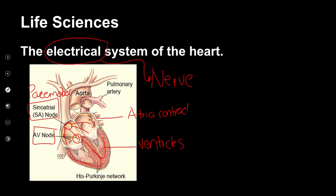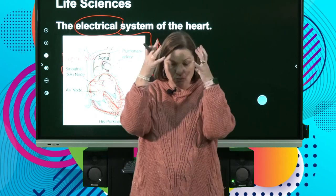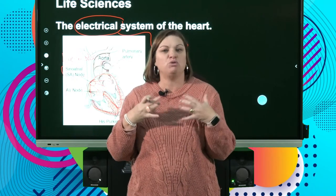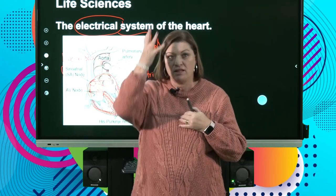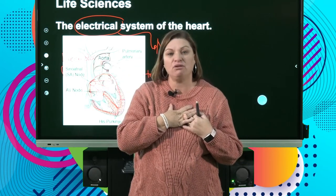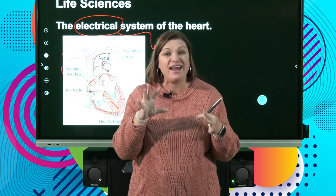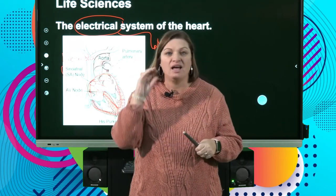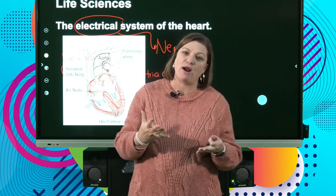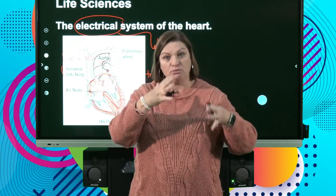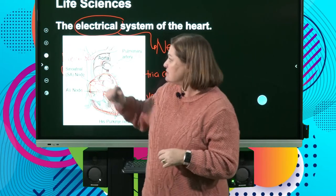The heart is what we call autonomic — the heart tells itself what to do. The brain actually doesn't tell the heart to beat. The brain only tells the heart how fast it must beat. That's very often when you see somebody they say is brain dead — their brain is not working but their heart is still working.